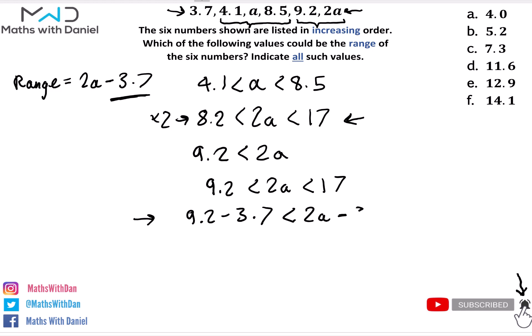Now what is 9.2 take away 3.7? 9.2 take away 3.7 is 5.5, and this is less than 2a take away 3.7, and 17 take away 3.7 is 13.3. In other words, because the range is 2a minus 3.7, we can therefore say that we could replace the 2a minus 3.7 with the range. So we know that the range has to vary between 5.5 and 13.3.